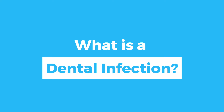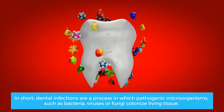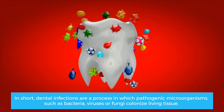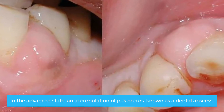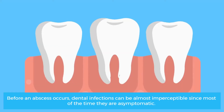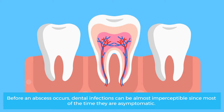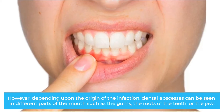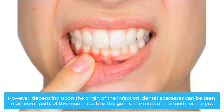Let's start with the most important question: What is a dental infection? In short, dental infections are a process in which pathogenic microorganisms, such as bacteria, viruses, or fungi colonize living tissue. In the advanced state, an accumulation of pus occurs, known as a dental abscess. Before an abscess occurs, dental infections can be almost imperceptible, since most of the time they are asymptomatic. However, depending upon the origin of the infection, dental abscesses can be seen in different parts of the mouth, such as the gums, the roots of the teeth, or the jaw.